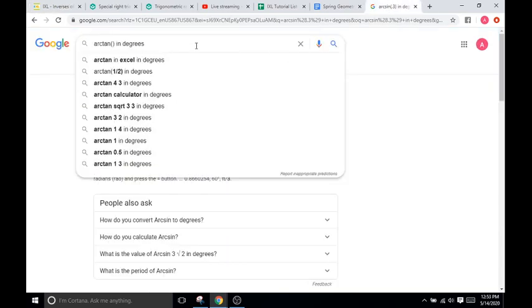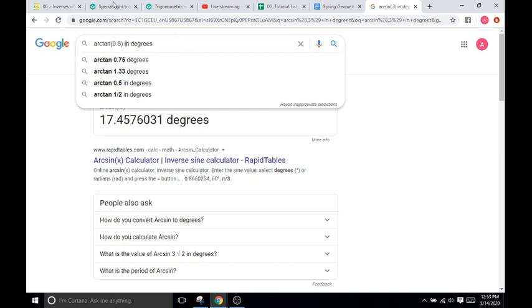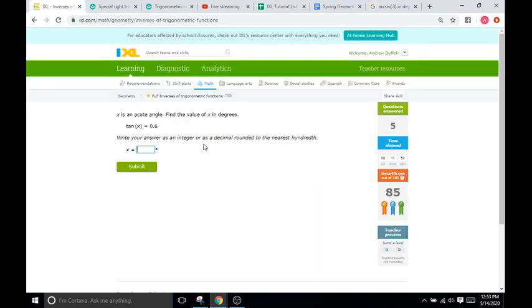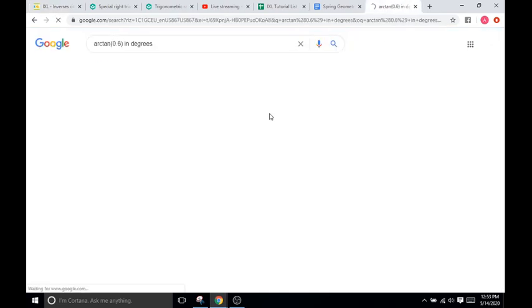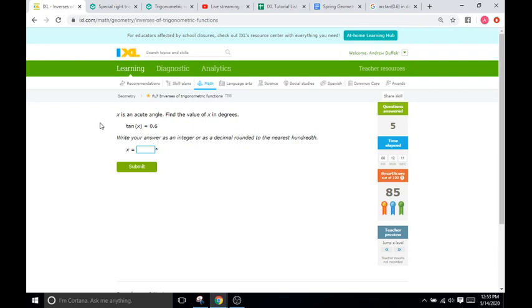And then in the parentheses there, I'm going to put 0.6. I'll do 0.6, and then type in 'in degrees' because the IXL wants the answer in degrees and it says answer as an integer or decimal rounded to the hundredth. So two spots. So I'm going to click enter and it gives us a degree value of 30.96. So I'm going to come over here and type in 30.96. And that is our answer.